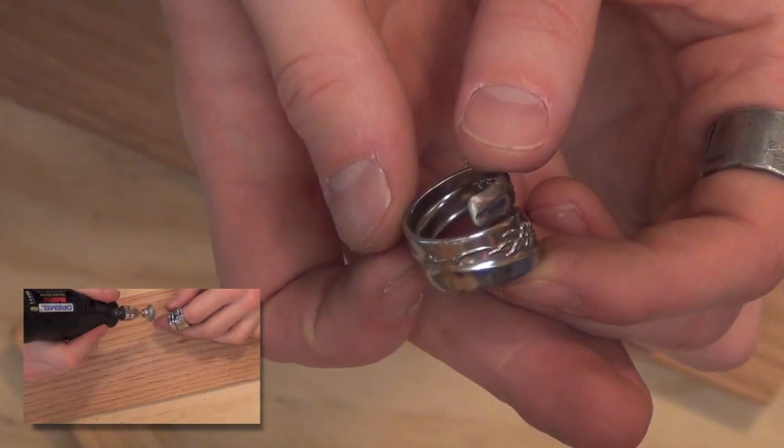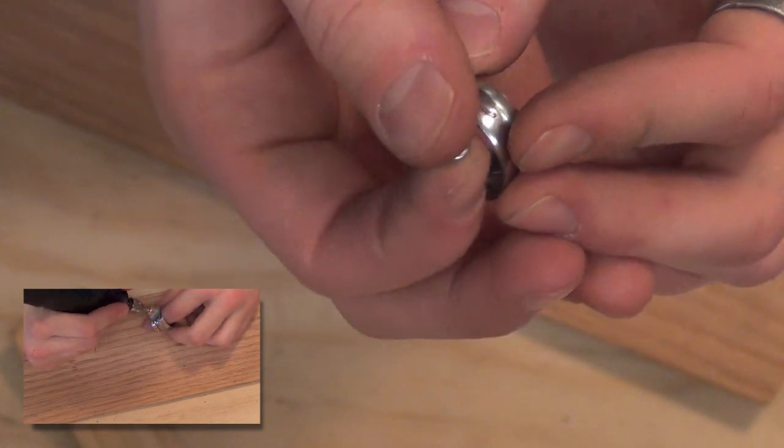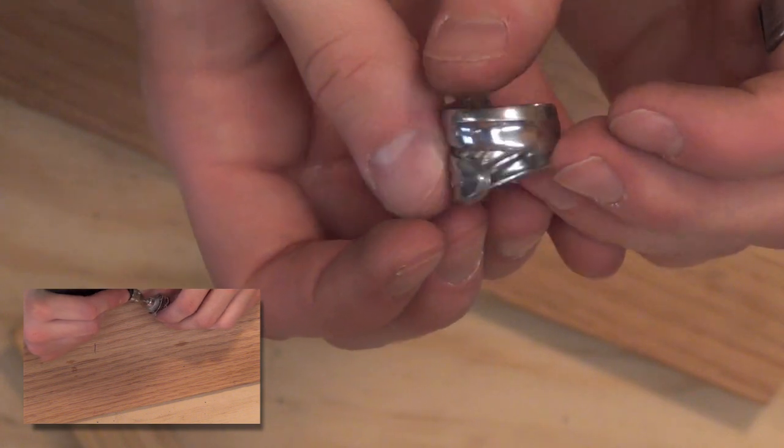All right, this next step is to take your Dremel tool, and if you have a brush bit, to brush this up. And that will help take some of that dingy look off of it, but it will also make it shine. So beautiful.